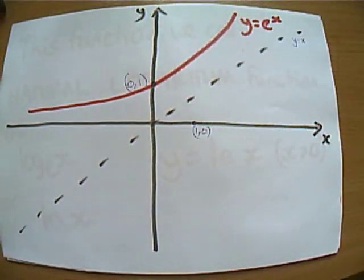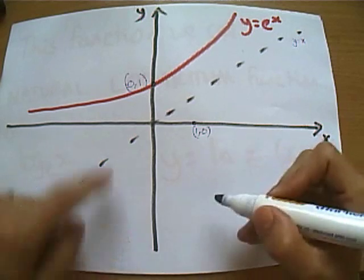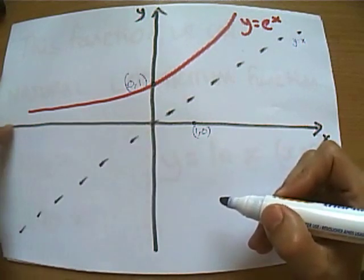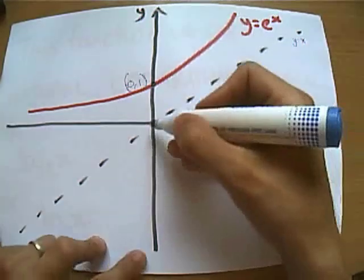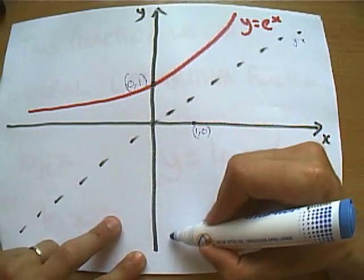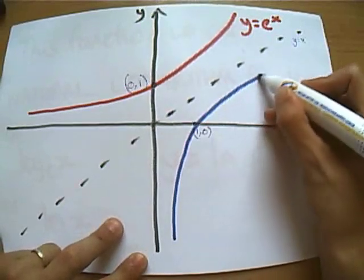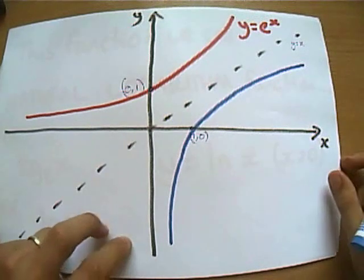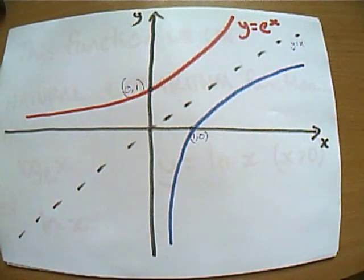And if we draw that inverse function, can you see here it never actually touched the x-axis? Well, it's never actually going to touch the y-axis now. So it's going to come up here, through here, and carry on like there, converging towards a value.